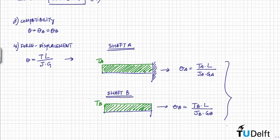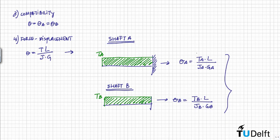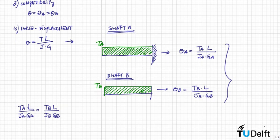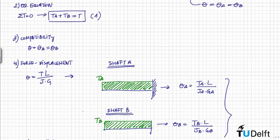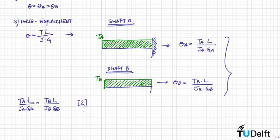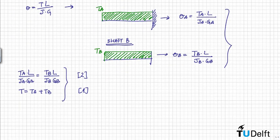Using these two relationships and substituting them into the compatibility equation, we find the second equation we were looking for. Combining this with equation 1 — T equals TA plus TB — we have a set of two equations with two unknowns that we can easily solve.